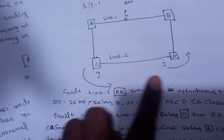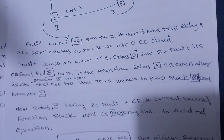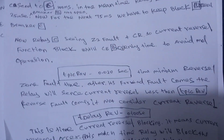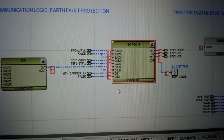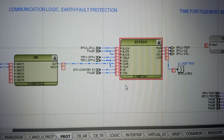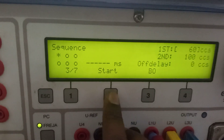Relay C is already monitoring for the reverse fault also, so it will cause an unwanted operation. You should read the theory — it is already written. Now we will check the function block of the communication scheme. I injected a reverse zone fault first, then a forward zone fault, and timing without carrier send, because I am not giving the carrier send command.